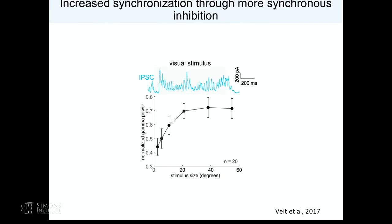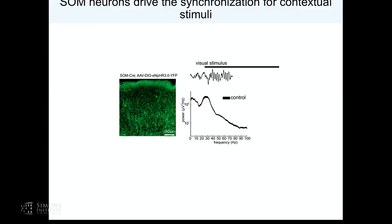What underlies the synchronization? A hypothesis is inhibition. If you measure the power spectrum of inhibitory current as you increase stimulus size, you see a massive increase in synchronization in the inhibitory current — rhythmic inhibitory currents at the exact same frequency as the local field potential and neuronal spiking. This gave us the hypothesis that somatostatin cells — which fire more and more with increased size and are the only cell in layer 2-3 to do so — are mediating this gamma-band synchronization. Indeed, when you put halorhodopsin in somatostatin cells and silence them, this rhythmic synchronization close to 30 hertz is strongly suppressed.